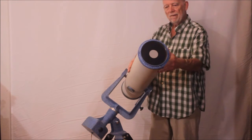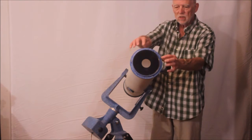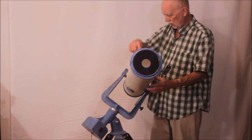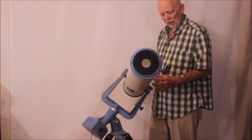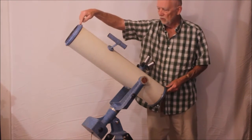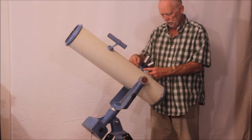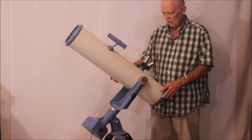In the Maksutov-Newtonian, you can see the corrector plate right here in the front. So this has a corrector plate like any Maksutov and then it's got a mirror in the back and there's a spot on the front and it comes back to a secondary mirror which is right here and it balances it out like that.